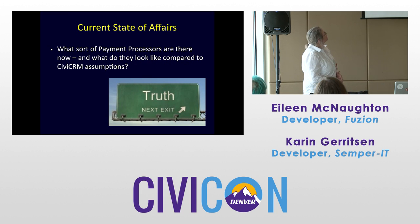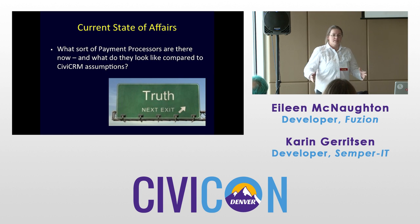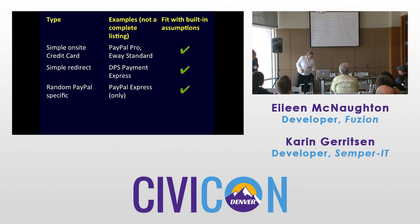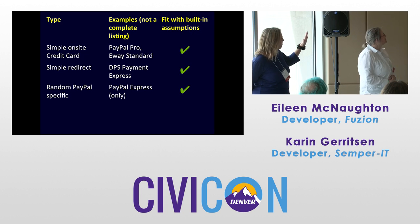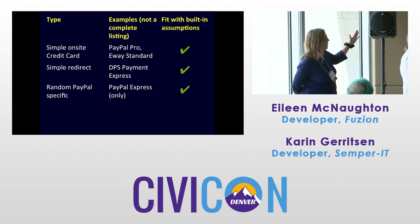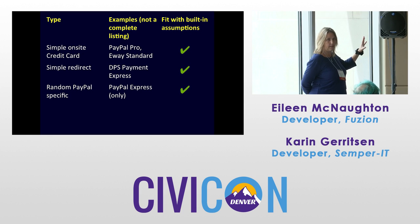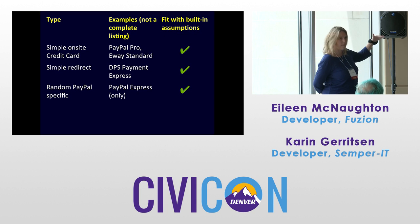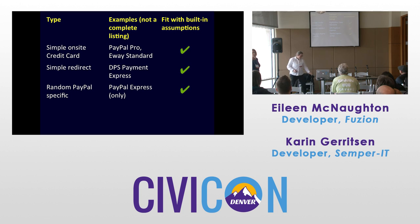Current state of affairs — let's look at what payment processor extensions are out there right now and see how they compare to our three buckets, the basic CiviCRM assumptions. Some examples look really well with the basic assumptions: PayPal Pro, DPS, PayPal Express. These are early ones that were built in and fit those existing assumptions. PayPal Express fits very well with the PayPal-specific model.